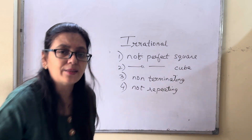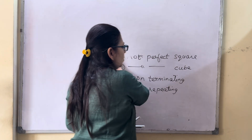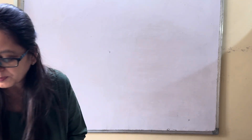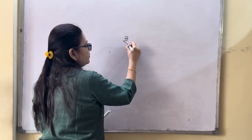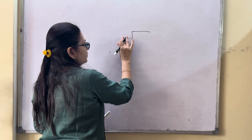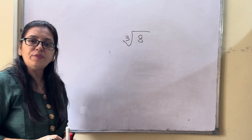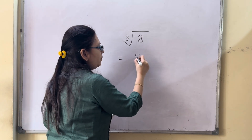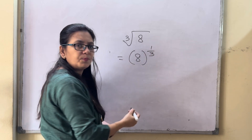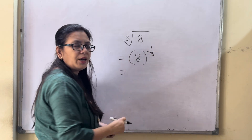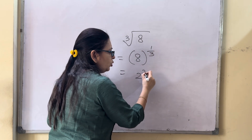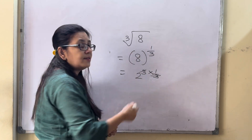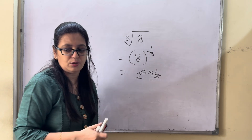Let's check whether numbers are rational or irrational. Let's do a few sums from exercise 1C from R.S. Agarwal. For example, cube root of 8 — in exponential form it is 8 to the power 1 by 3. We write 8 as 2 cubed, times 1 by 3, so you get the answer 2. This is a rational number, not an irrational number.